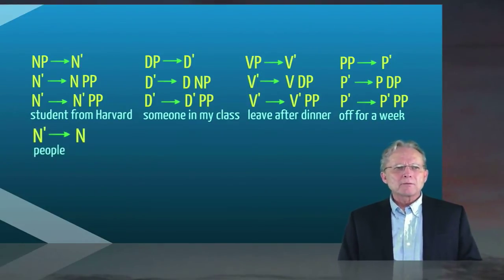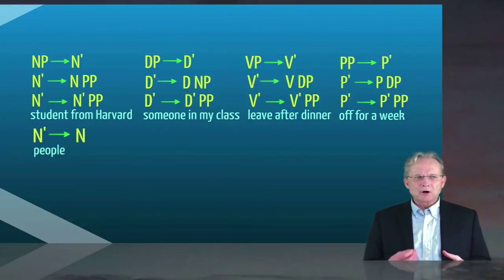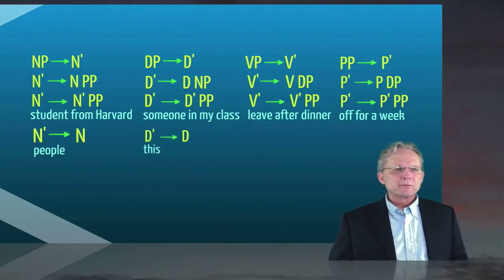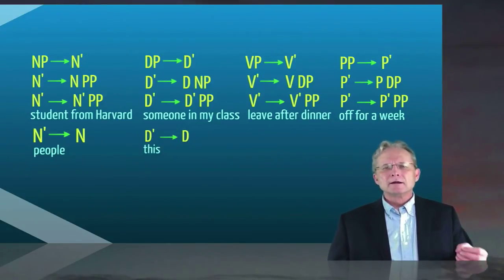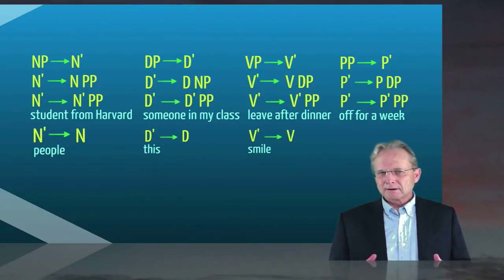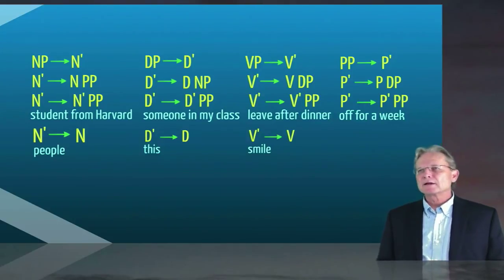The N bar doesn't need to have a complement or an adjunct. And one can go from the N bar directly to simply an N, in which case we would have people. The same thing with a determiner phrase, where the D bar can end and complete itself with nothing but a determiner, as in the case of this, and the V bar can end with simply a V, as in the case of an intransitive verb such as smile.